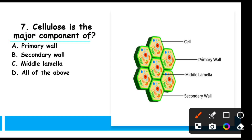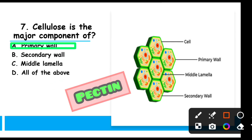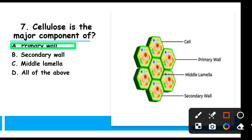MCQ 7: Cellulose is the major component of — cellulose is the major component of the primary wall. The primary wall is not made up of cellulose alone; it also contains lignin and pectin materials, but the major component is cellulose.